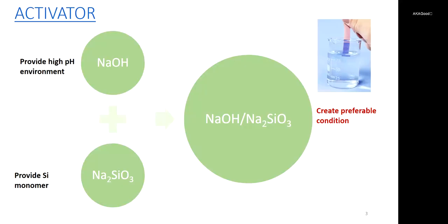Among all the activators, sodium hydroxide and sodium silicate are the most commonly used alkaline activators. Sodium hydroxide solution could provide a high pH environment to accelerate the reaction process, while sodium silicate could provide silicon monomers and form a denser structure. Previous studies have shown that a combination of sodium hydroxide and sodium silicate could create the highest strength of alkali-activated materials.